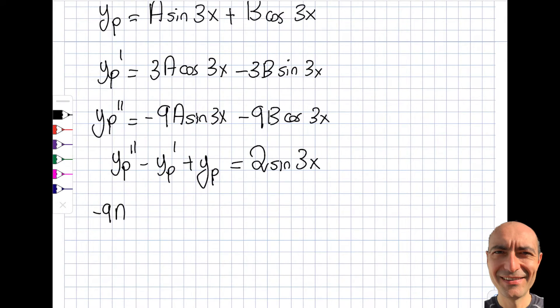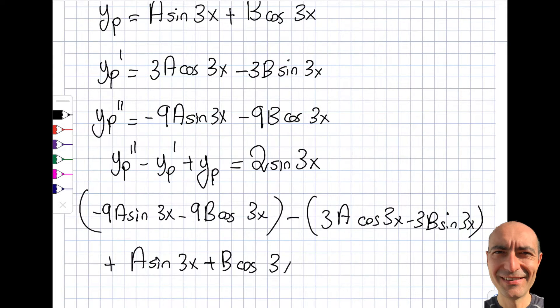I will have minus 9a sine 3x minus 9b cosine 3x, negative parentheses of 3a cosine 3x minus 3b sine 3x plus the last term is yp which is up there. So a sine 3x plus b cosine 3x and the right-hand side of the equation reads 2 times sine of 3x.